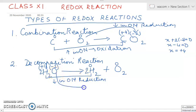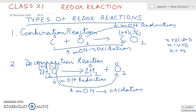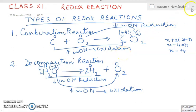Oxygen's oxidation state goes from minus two to zero — there is an increase in oxidation number, so oxygen undergoes oxidation. That means this is a redox reaction because it has both reduction and oxidation, and since one substance divided into components, it is also a decomposition reaction — making it a decomposition redox reaction.